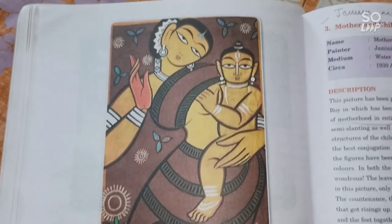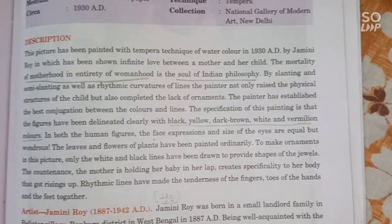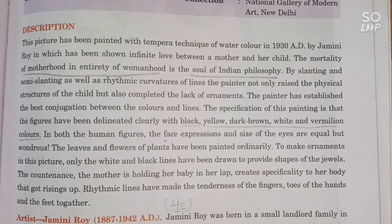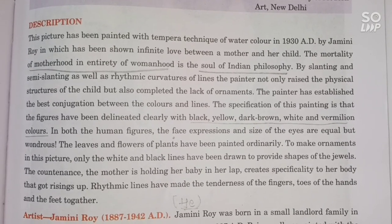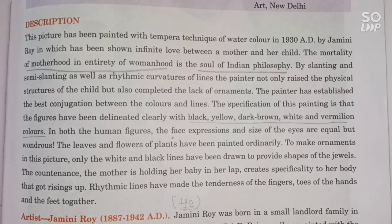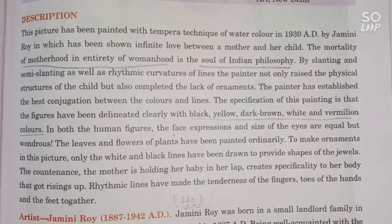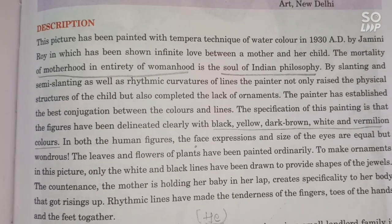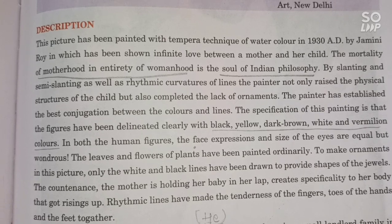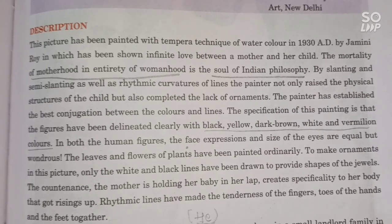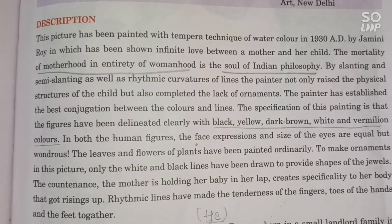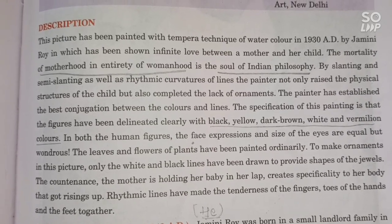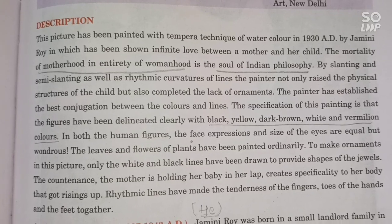The picture has been painted with the tempera technique of watercolor in 1930 AD by Jamini Roy, in which the infinite love between a mother and a child has been shown. The totality of motherhood in the entirety of womanhood is the soul of Indian philosophy. By slanting and semi-slanting as well as rhythmic curvature of lines, the painter not only raised the physical structure of the child but also completed the lack of ornaments.